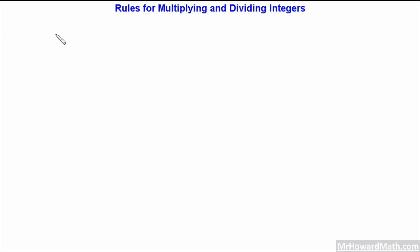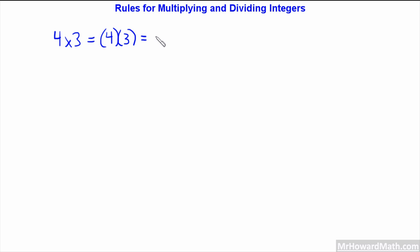Let's get started with a real simple one. We'll do 4 times 3 — from now on I'm going to write this in algebra notation, because that's a better notation to start preparing you for that. 4 times 3 equals 12. Notice that these are both positives: positive 4 times positive 3 equals positive 12.